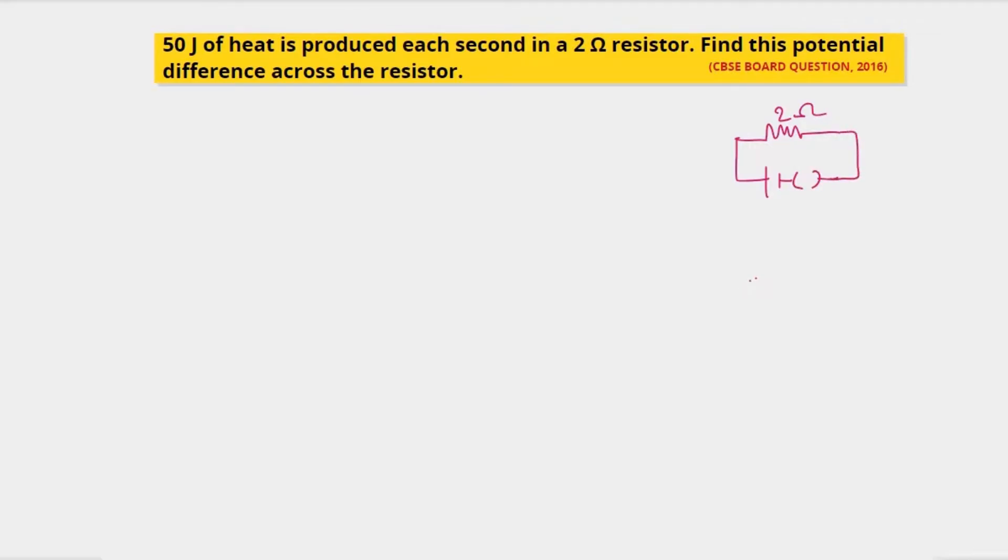And in this resistor, 50 joules of heat is produced in each second, per second. So we have to find out what is the potential difference across this resistor. If I write here heat per second, heat is produced per second. Heat means heat energy, right? So it is heat energy by time.